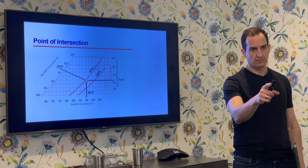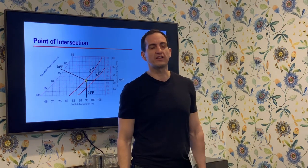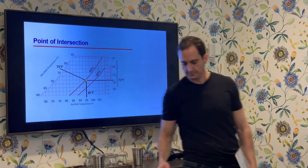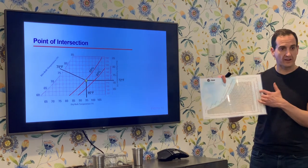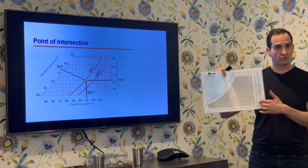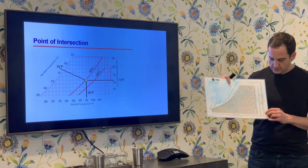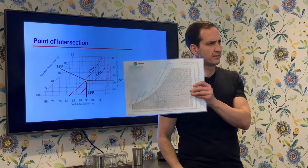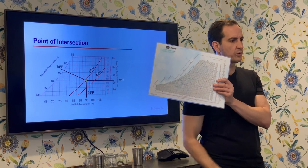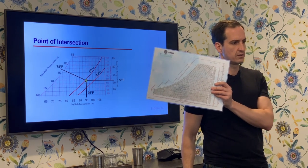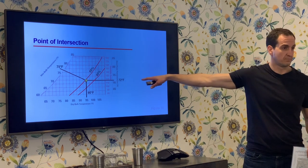What is the dew point at this condition? Remember, the dew point is along the right side of your chart — it's the axis that goes straight up and down. About 72°F. Do we have consensus? Everyone agrees: 72°F dew point.